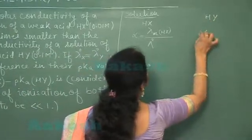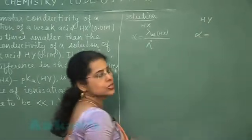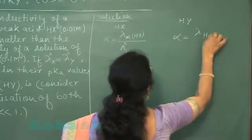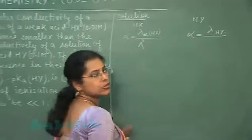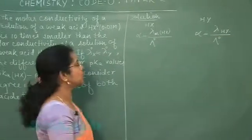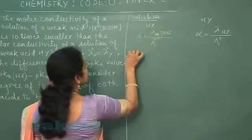This alpha is molar conductivity of HX at given concentration by molar conductivity at infinite dilution. Similarly HY की बात करें, so this alpha which is degree of ionization, this is molar conductivity of HY at given concentration by molar conductivity at infinite dilution. This is a weak acid.